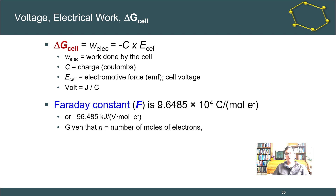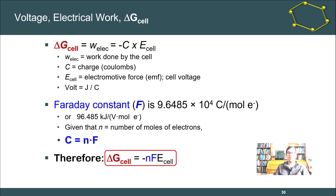In any equation we work with, n is the number of moles of electrons transferred — not to be confused with moles of substrate or anything else. We can relate Faraday's constant to the total charge by multiplying F by n. Substituting nF for the charge into our earlier expression gives a really useful result: the change in Gibbs energy of the cell equals negative n times F times the cell potential, ΔG = −nFE.